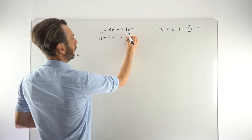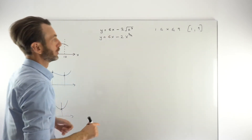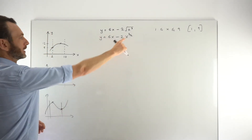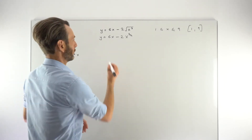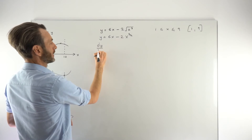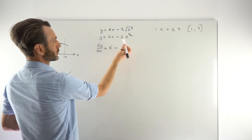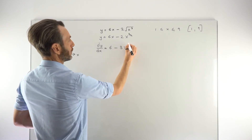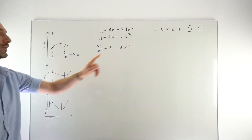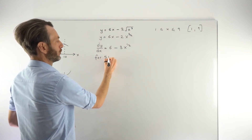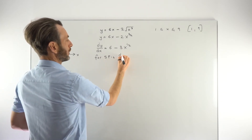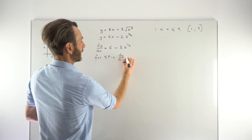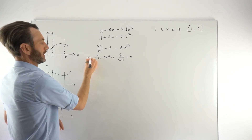Using one of the indices rules, we change the square root into a 1/2 power, and combined with the existing cubed power, that becomes 3 over 2. So the function is now in a differentiable form. Taking the first derivative, dy/dx equals 6 minus 3x to the 1/2. We multiply by the power and reduce the power by 1: 2 times 3/2 is 3, then 3/2 minus 1 is 1/2. For stationary points, we set dy/dx equal to 0.